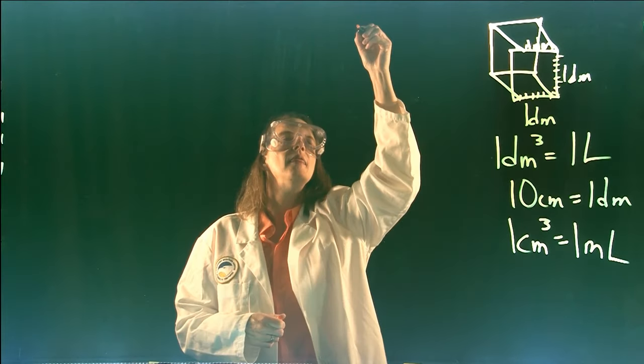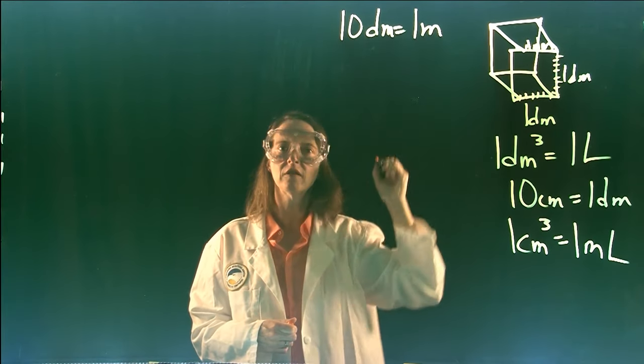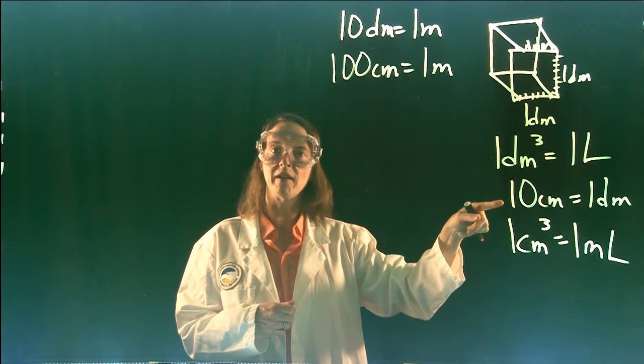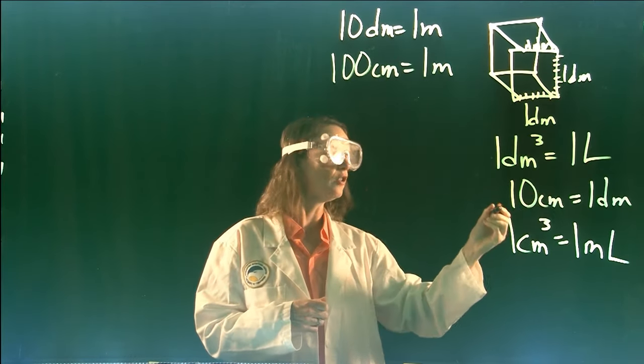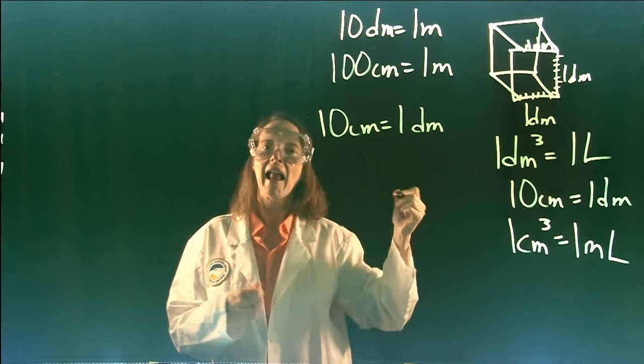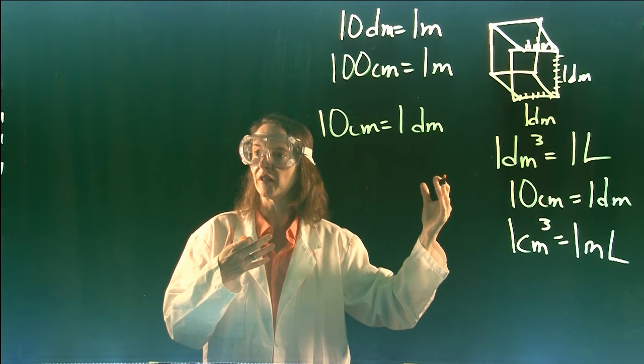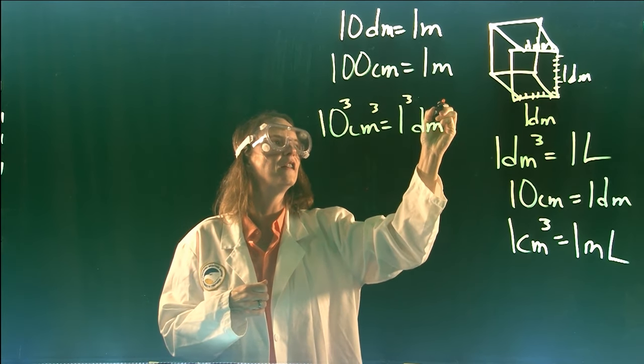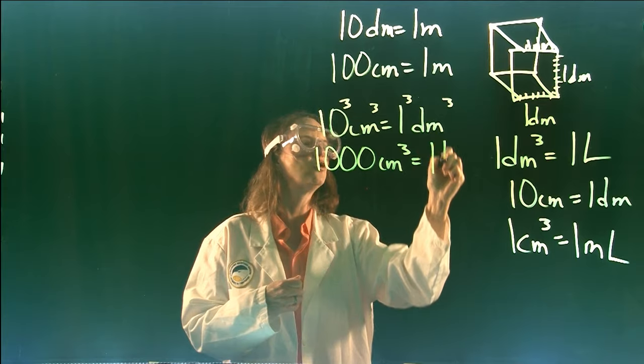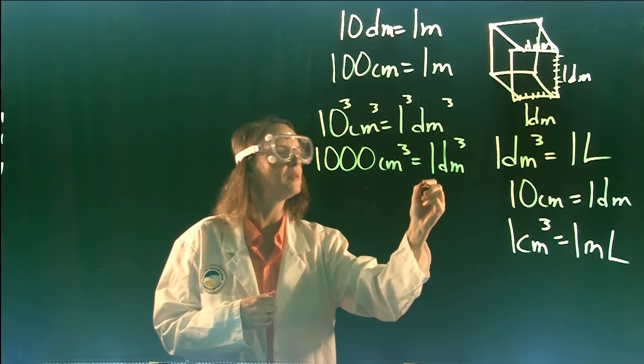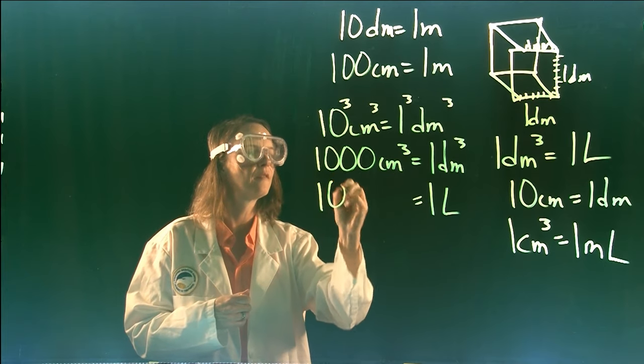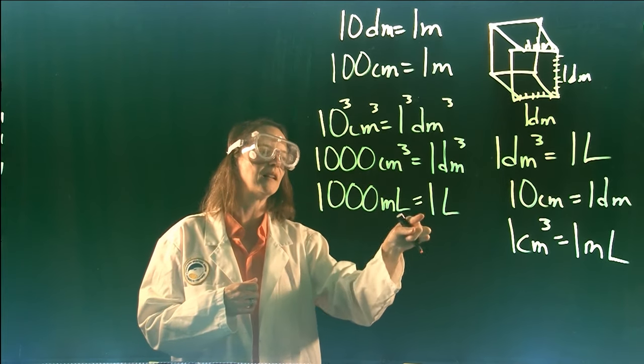Now, you have memorized that there are 10 decimeters in one meter, and you have memorized that there are 100 centimeters in one meter. And as we pointed out, that means 10 centimeters to one decimeter. If we take the linear relationship, 10 centimeters equal to one decimeter, and cube that relationship, just cube everything: 10 cubed centimeters cubed equal to one decimeter cubed. Of course, that is 1000 cubic centimeters equal to one cubic decimeter. And if a decimeter cubed is the same as a liter, and a centimeter cubed is the same as a milliliter, we have 1000 milliliters equal to one liter. In other words, if you know the linear relationship, then the cubic relationship is just everything cubed.